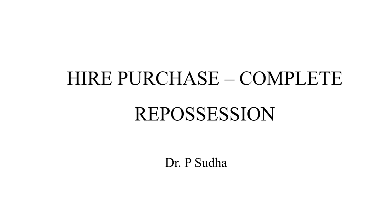Hello viewers. In this video we shall discuss how to calculate hire purchase transactions when the hire purchaser, that is the buyer, defaults in his payment. If the hire purchaser fails to make any installment, and in consequence the hire vendor takes the goods completely, how are we going to do the ledger accounts? What is complete repossession? On default by the buyer, the hire vendor completely takes back the whole lot of goods that he has sold to the hire purchaser. This is complete repossession.